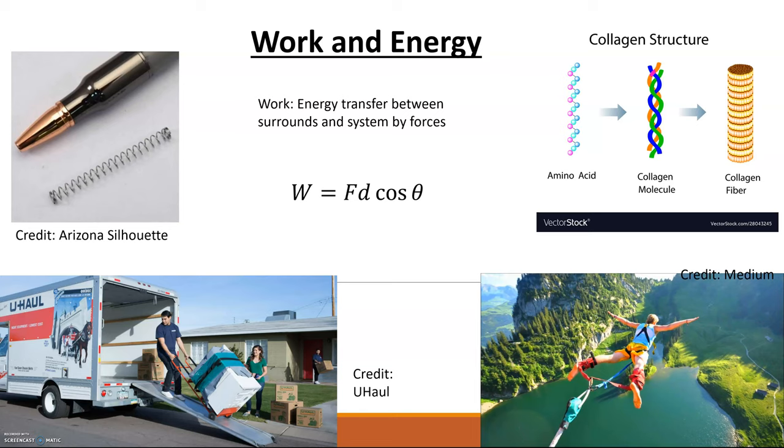In physics when we talk about work, work is the energy transfer between surroundings and a system by forces. A system could be, in the previous modules we've dealt with blocks as systems, it's whatever object of interest or objects of interest that you are looking at. That's your system. Everything else is your surroundings. The system in this bottom right picture of the bungee jumper would be the person and the bungee, and the surroundings would be everything else.